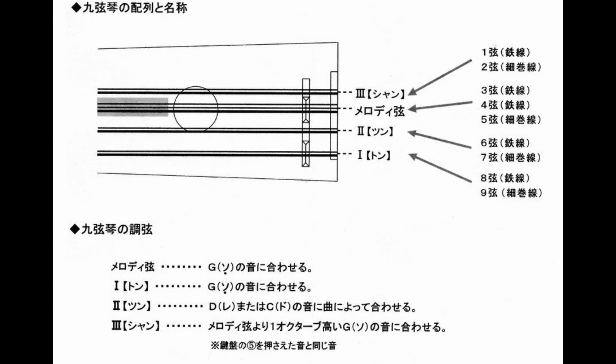You can see based on this chart that the tuning they recommend is G, G, D or C, and G, aka top 2 strings to G, next 3 to G, then to D, then to G. I've attached a little sample clip here from the Nardan company on demonstrating playing this 9-string so you can get an idea how it would sound with this tuning.